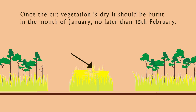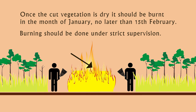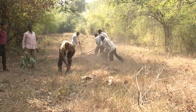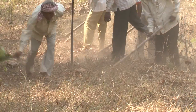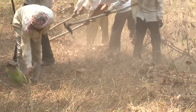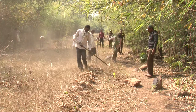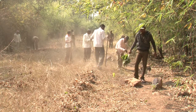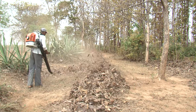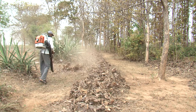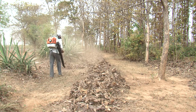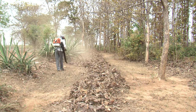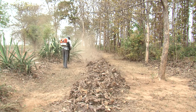A mechanical grass cutter can also be used if available to clear the fire line. Once the cut vegetation is dry, it should be burnt in the month of January, not later than the 15th of February. Burning should be done under strict supervision to avoid fire incidents extending to adjoining areas. Before burning, the guidelines already cut should be further cleaned so that there is no loose leaf litter over them. Clearing of guidelines is important because if care is not taken, fire can spread into the forest. Blowers, if available, can also be used to clear the guidelines — they blow away all the cut grass, dry leaves, and twigs, thus clearing the guideline.